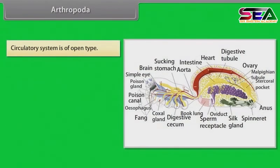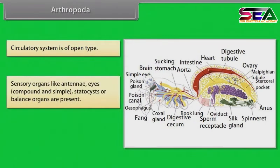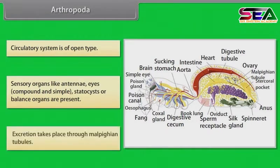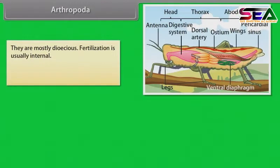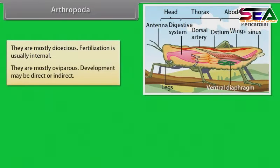The circulatory system is of open type. Sensory organs like antennae, compound and simple eyes, and statocysts (balance organs) are present. Excretion takes place through Malpighian tubules. They are mostly dioecious; fertilization is usually internal and they are mostly oviparous. Development may be direct or indirect.